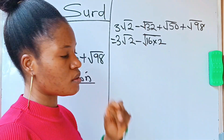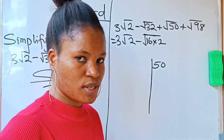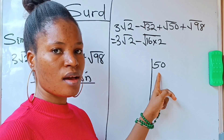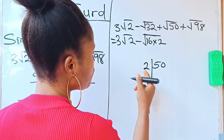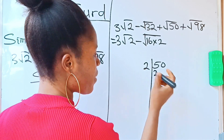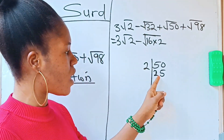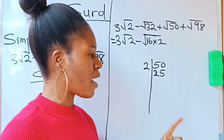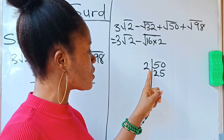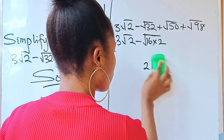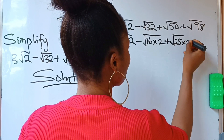Now for root 50: the smallest number that can divide 50 is 2. Dividing 50 by 2 gives 25. I stop here because 25 is a perfect square — its square root is 5. So 2 times 25 gives 50, and I rewrite root 50 as root 25 times 2, which gives us 5√2.